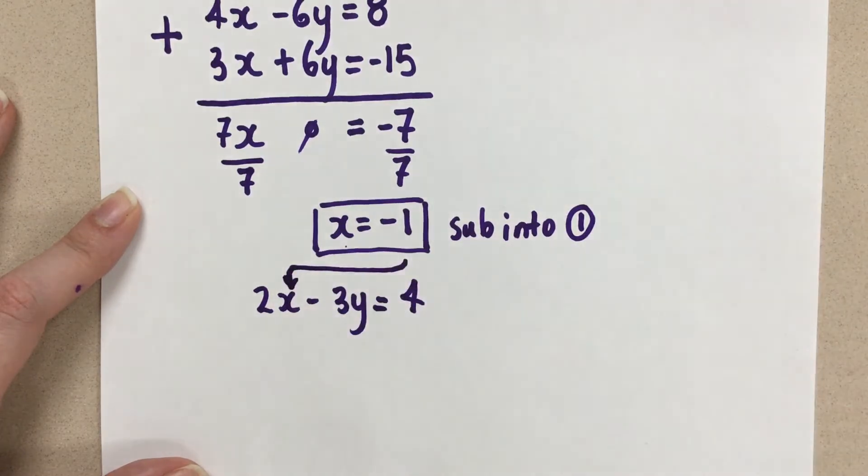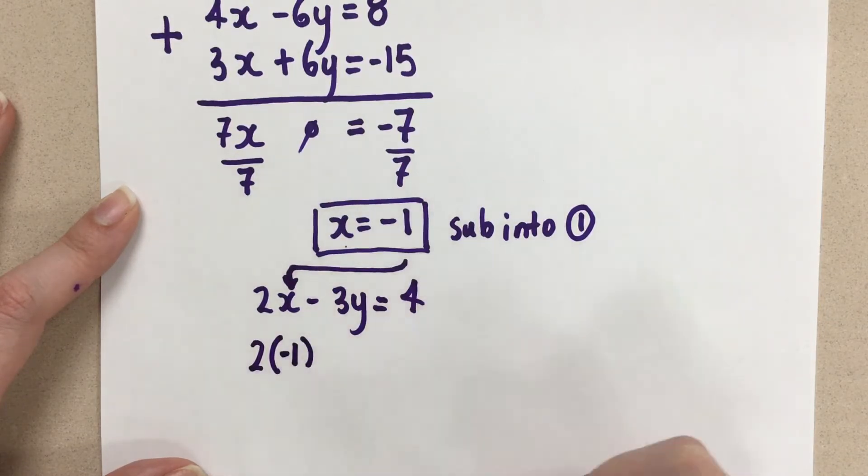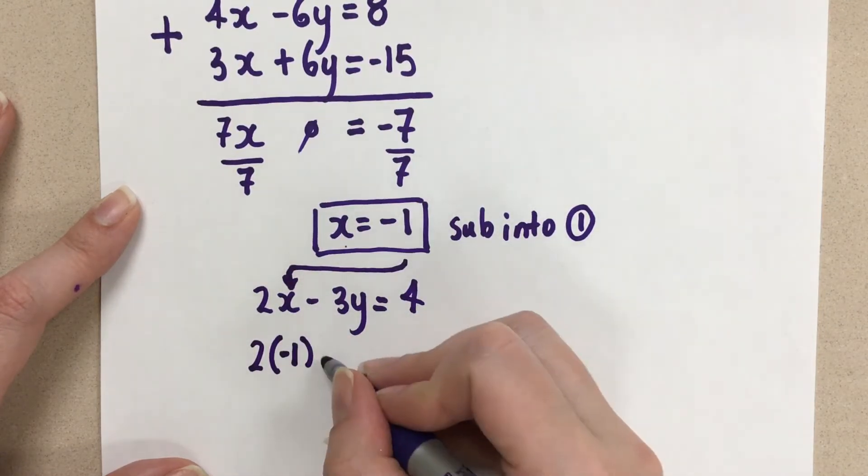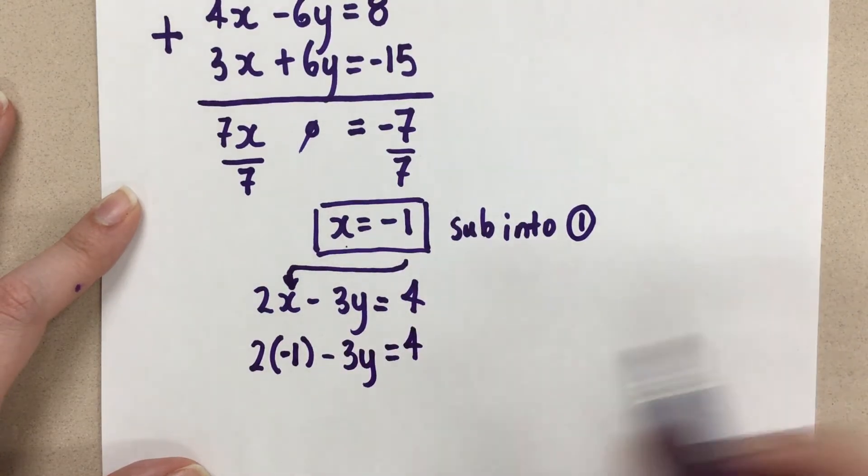So we're going to bring that negative 1 into the x and sub it in. So 2 times negative 1 now, since x is negative 1, minus 3y equals 4. Let's evaluate this. 2 times negative 1.